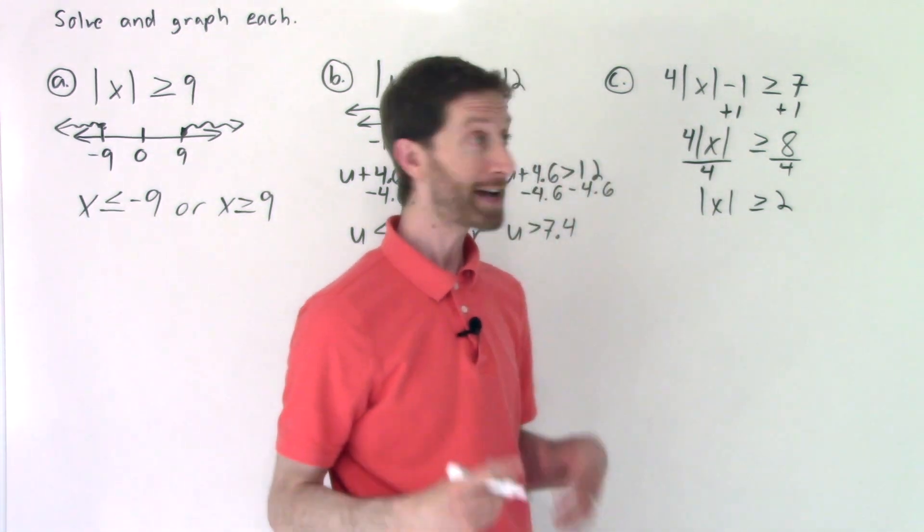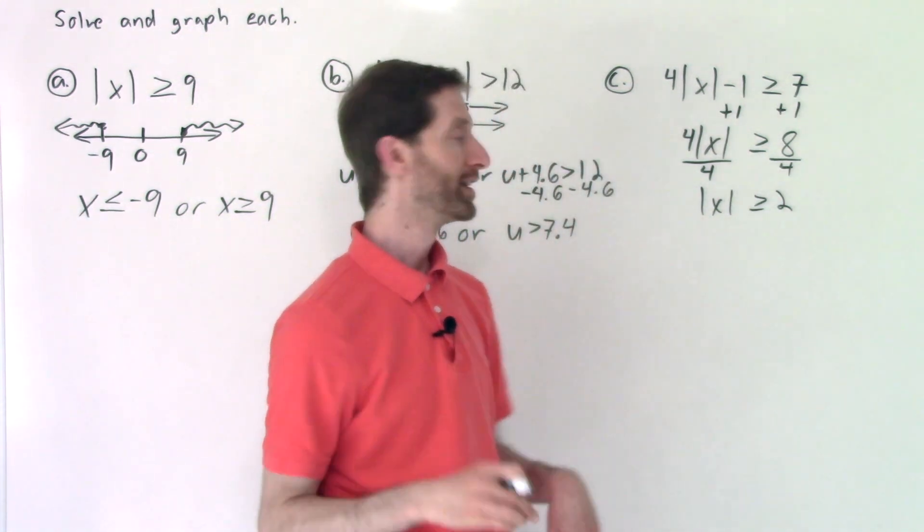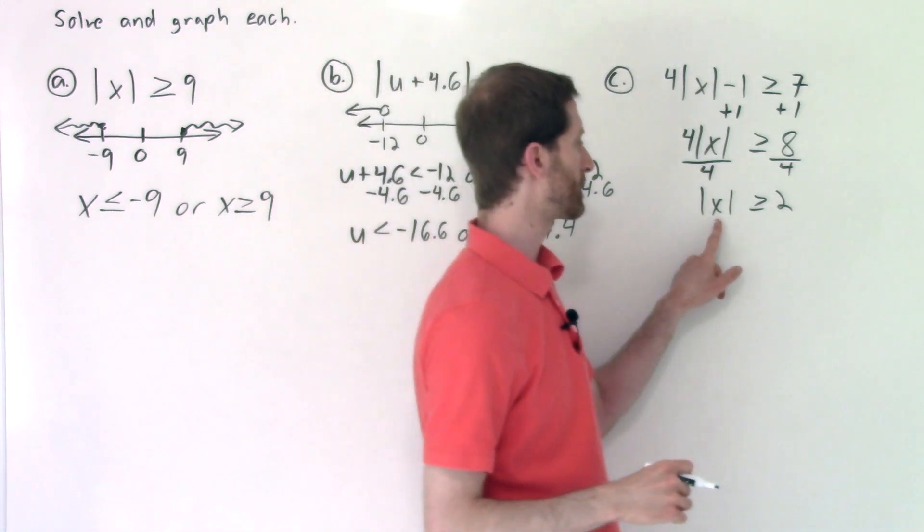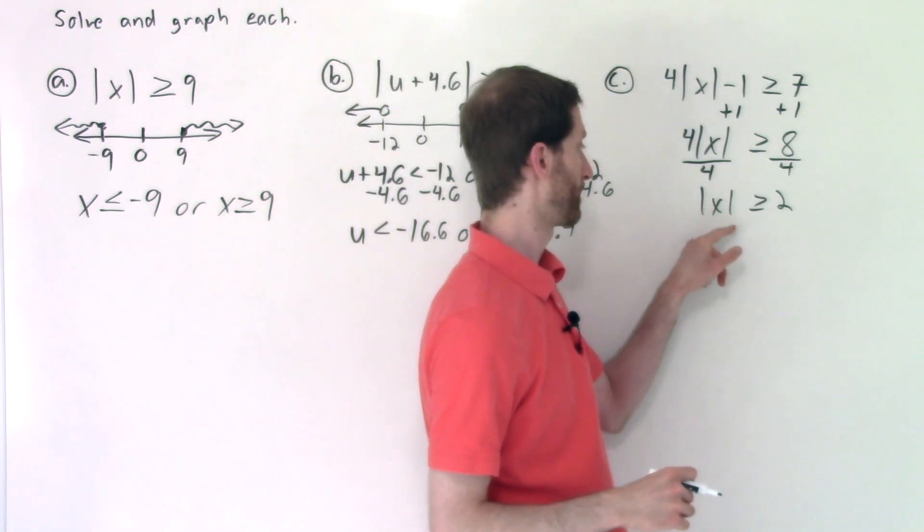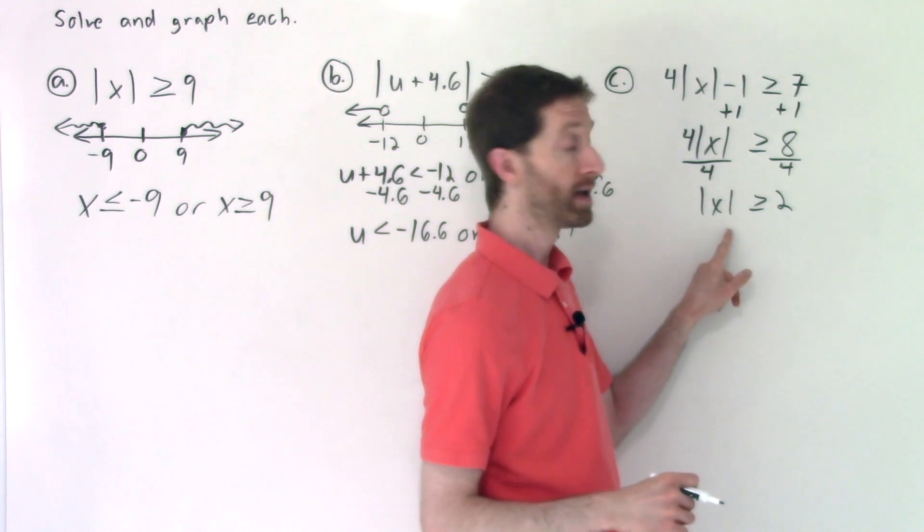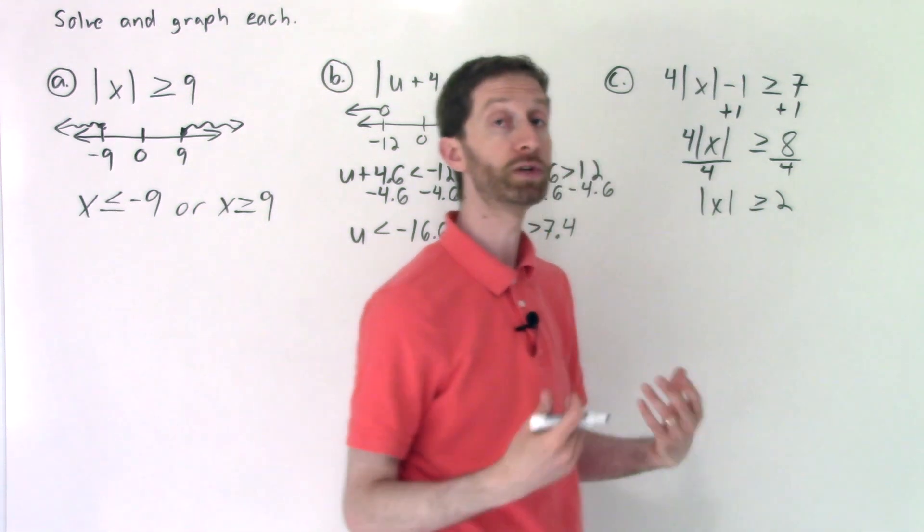And well, that's my absolute value cue. So I look at that and think, this is the distance from zero, right? So X, the distance that X is from zero is more than or equal to two.